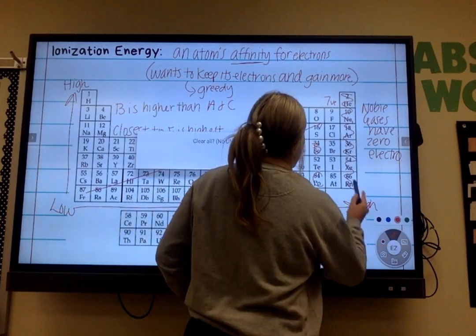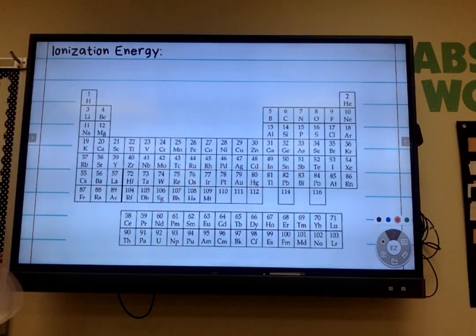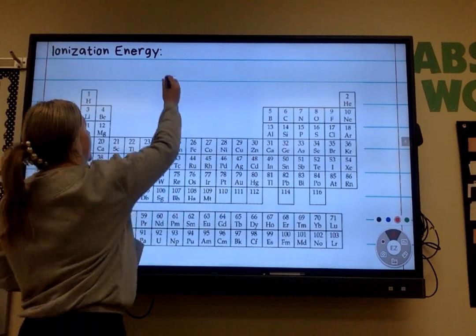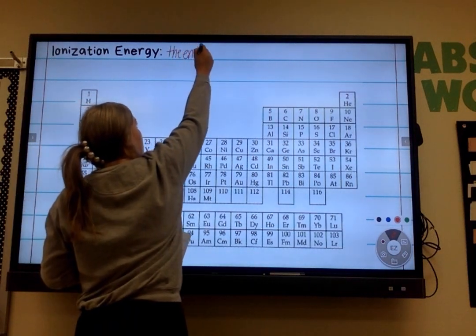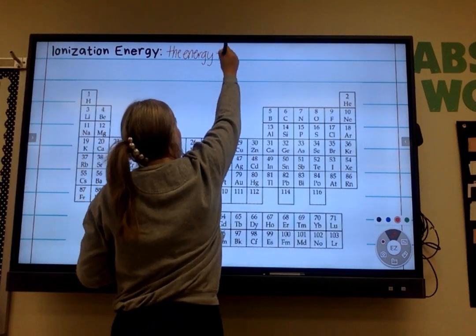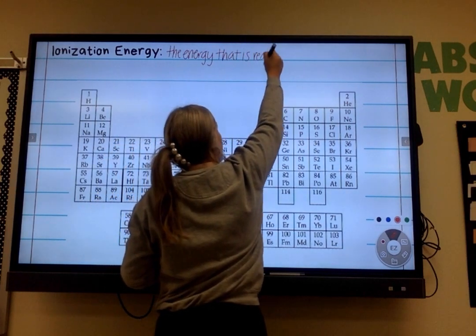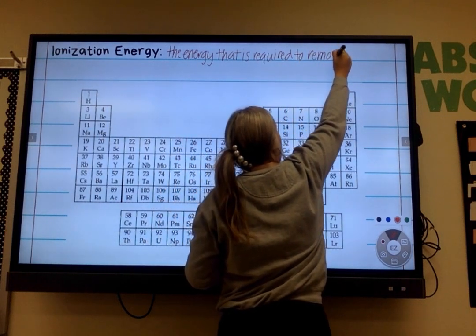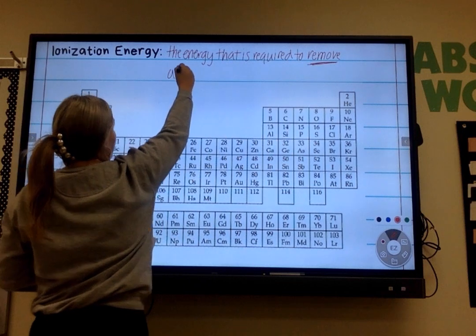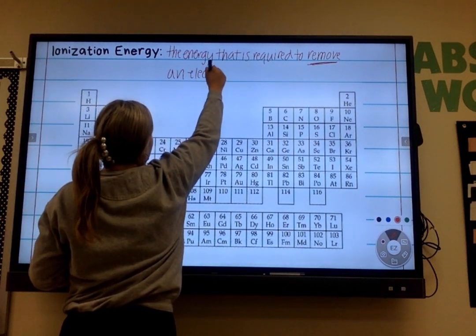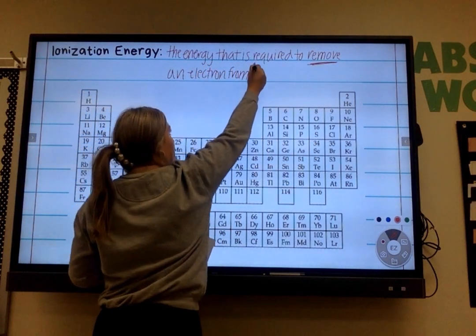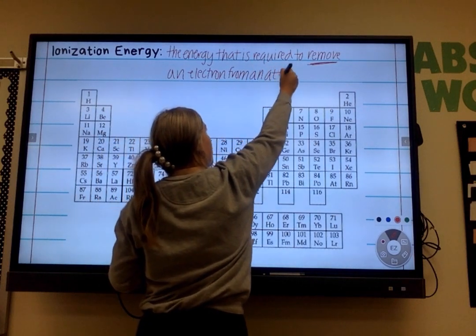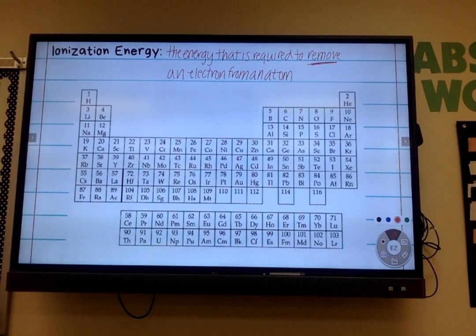Flip to the back. This is our last one. Ionization energy. So ionization energy is the energy that is required to remove, make sure you know that this is to remove an electron from an atom.